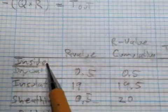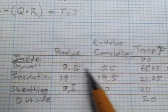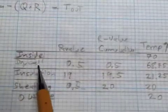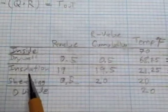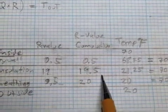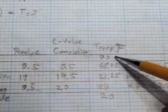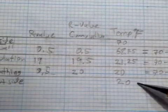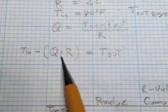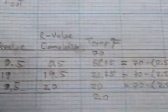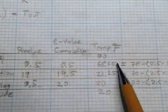Here's the table. We list inside temperature, then the R-value of each layer, the cumulative R-value going from inside to outside, and the resulting temperature. Drywall has R = 0.5, cumulative R = 0.5. Insulation has R = 19, cumulative R = 19.5. Sheathing has R = 0.5, cumulative R = 20. Inside temperature is set at 70°F and outside at 20°F. We apply the equation T_out = T_in − (Q × cumulative R) to each layer.